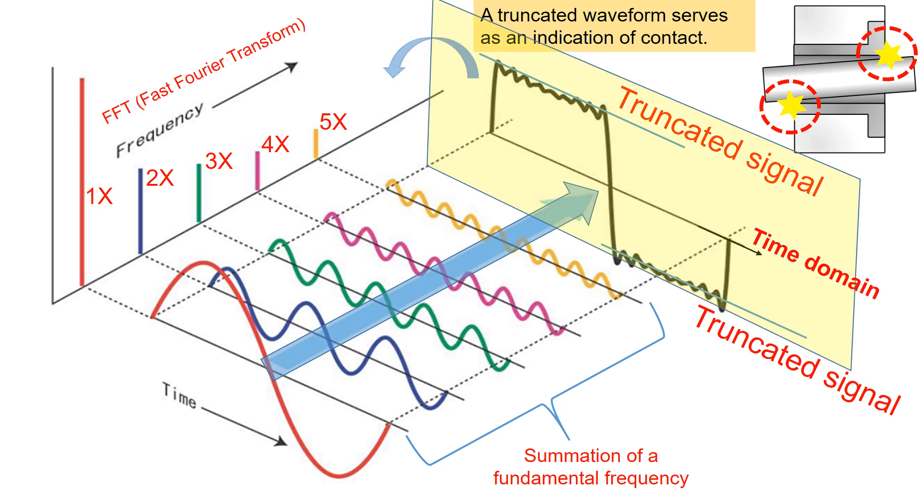By using FFT, the truncated signals in the time domain are translated as harmonic frequencies in the frequency domain. The truncated waveform is represented by harmonics such as 1x, 2x, 3x, 4x, and so on.